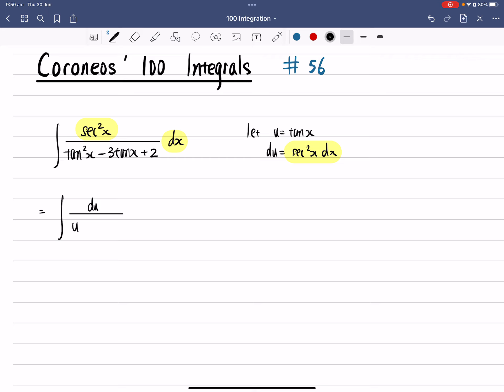Okay, so that gives you u² - 3u + 2. And that becomes, oh, you shouldn't have du anymore. That's probably the reason it's better to write du on the sides. Okay.